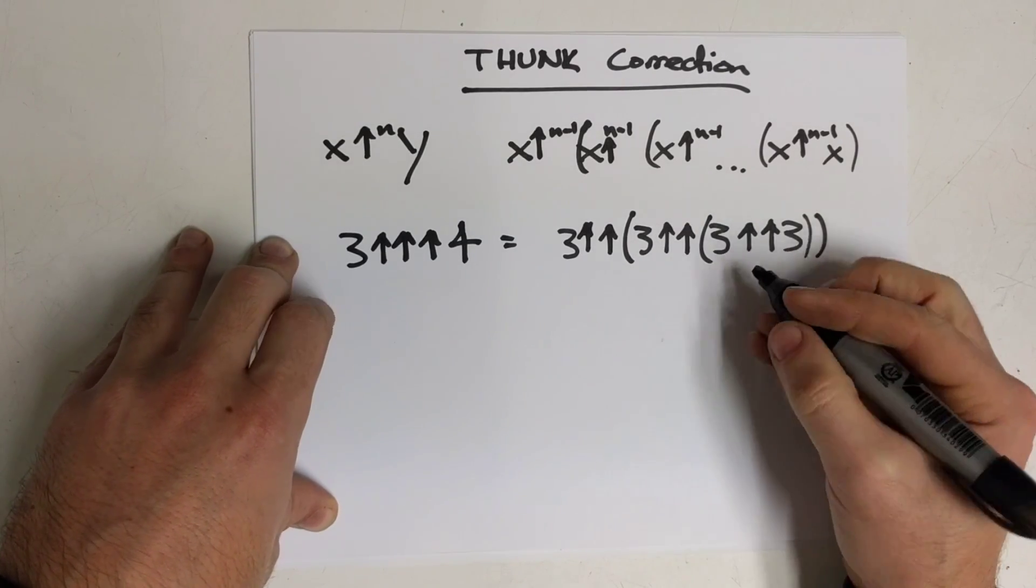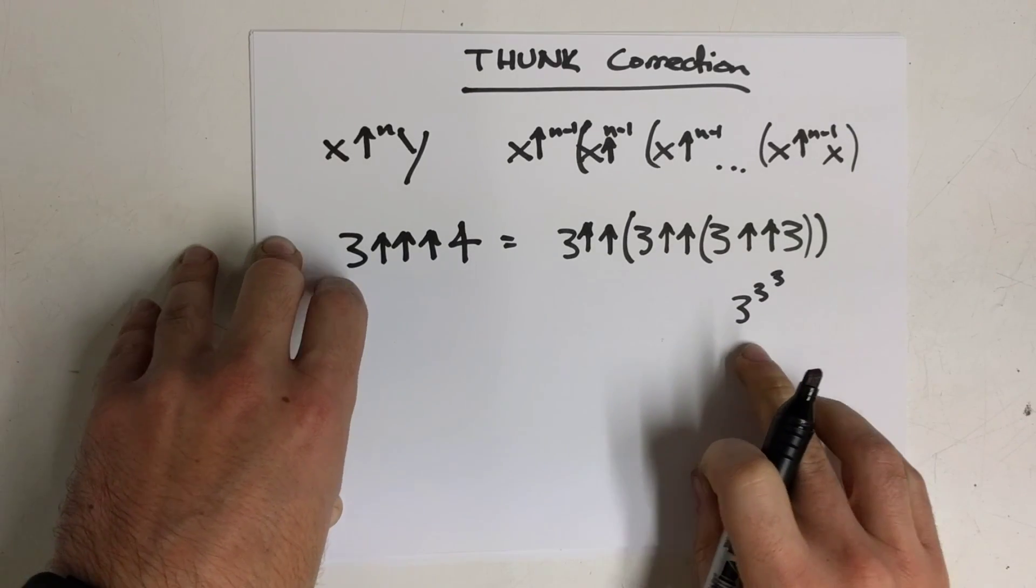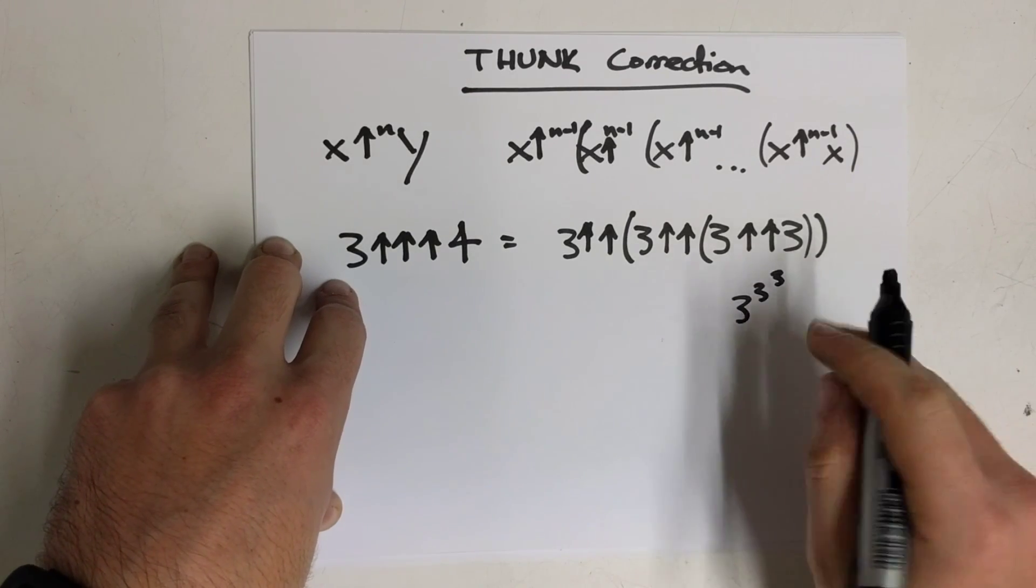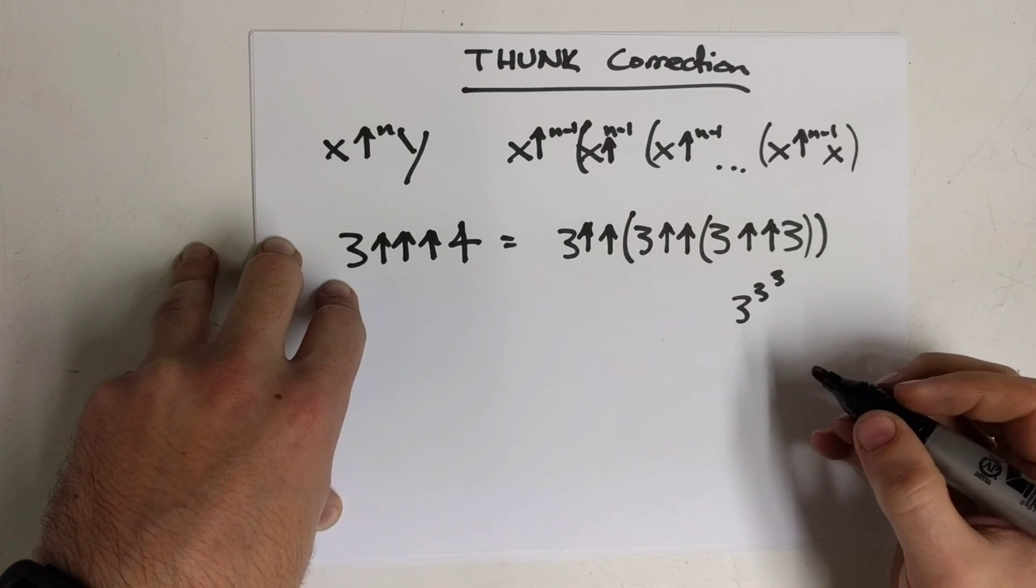3 double up 3 is 3 to the 3 to the 3. So 3 double up 3 is 3 to the 27th power, which is somewhere around 9.7 trillion.